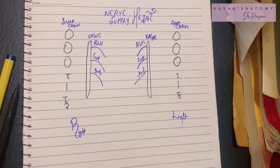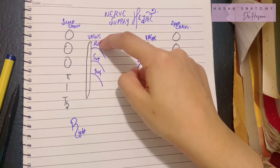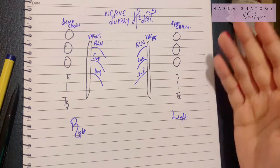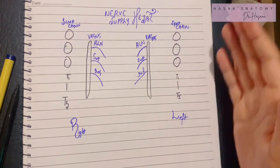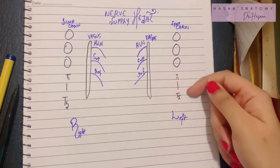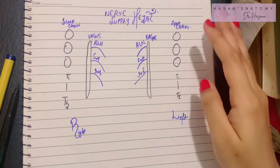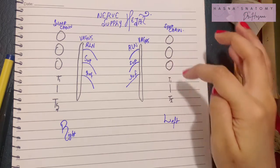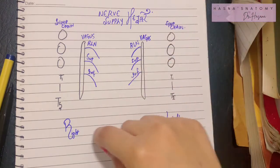The parasympathetic supply is derived via the vagus nerve and a branch of the recurrent laryngeal nerve. The sympathetic supply comes from the sympathetic chain, which has a cervical part and a thoracolumbar part. The cervical part has superior, middle, and inferior cervical ganglia, and the T1 to T5 thoracic sympathetic ganglia also give cardiac branches to the cardiac plexuses.